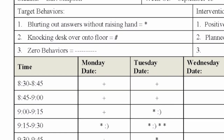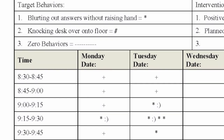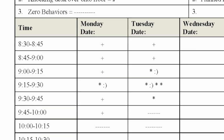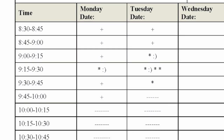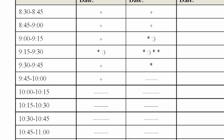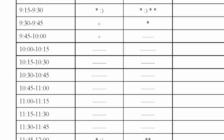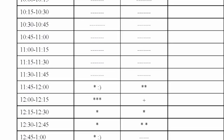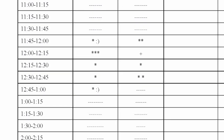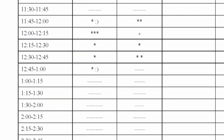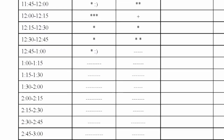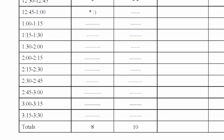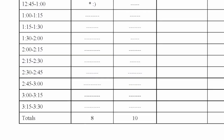Data should be summarized by counting the number of intervals during which the target behavior occurred — this is often referred to as interval recording. If you are counting actual instances of a behavior, this would be called frequency recording. The summarized count should be totaled at the bottom of each day's column on the scatterplot.